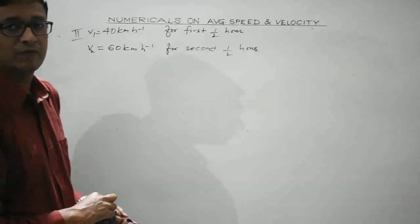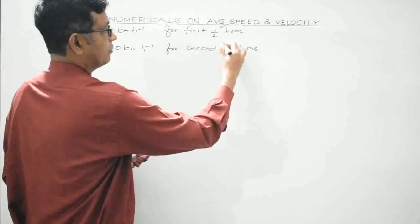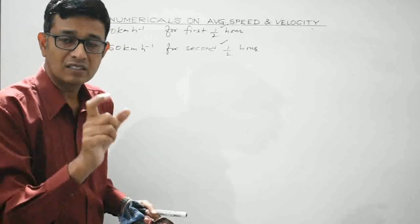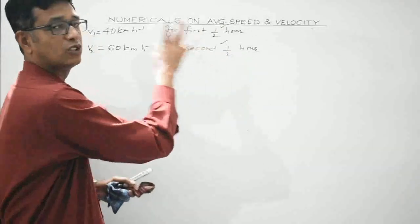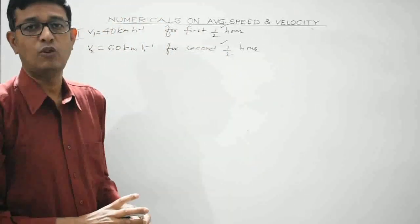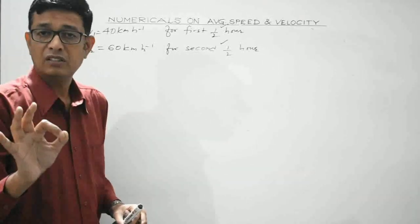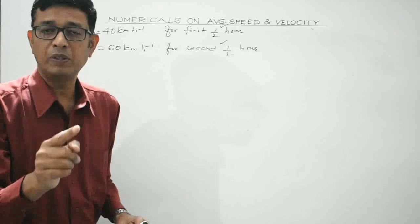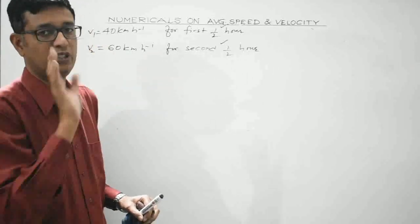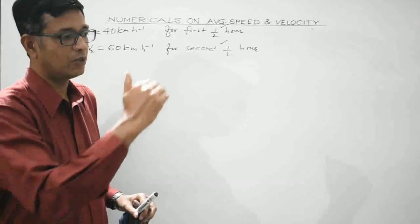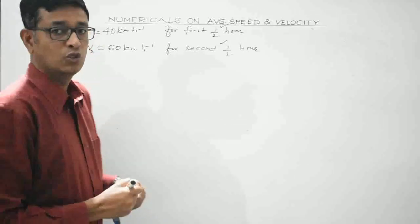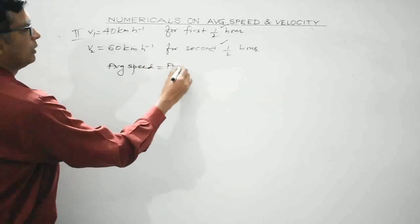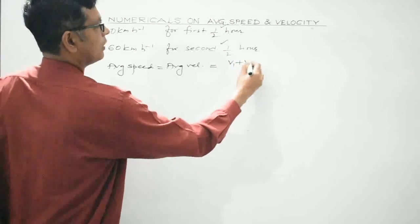Here the duration is the same for both intervals, so we deal with a body covering unequal distances in equal intervals of time. For this case, average speed (and average velocity, since motion is along a straight line) is given by the arithmetic mean of V₁ and V₂: (V₁ + V₂) / 2.